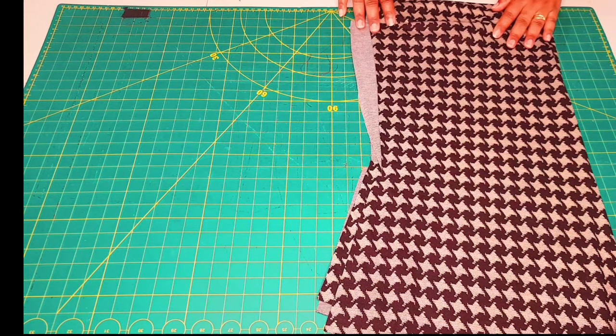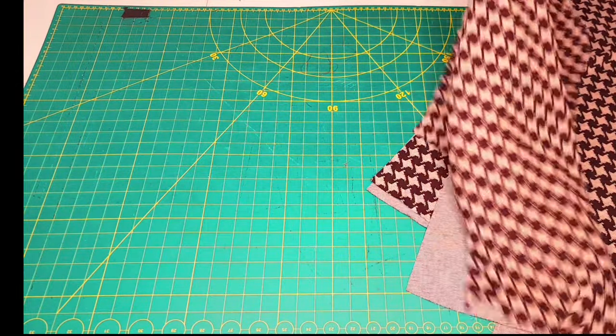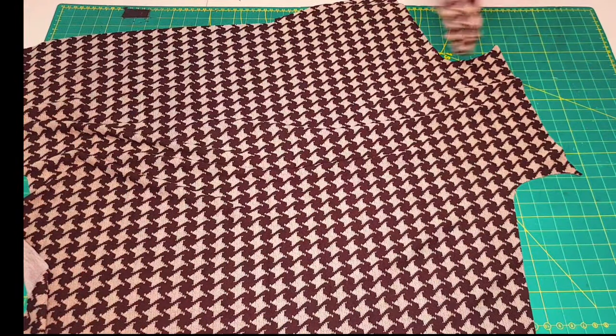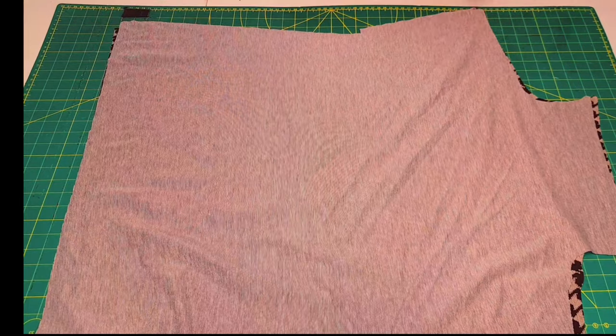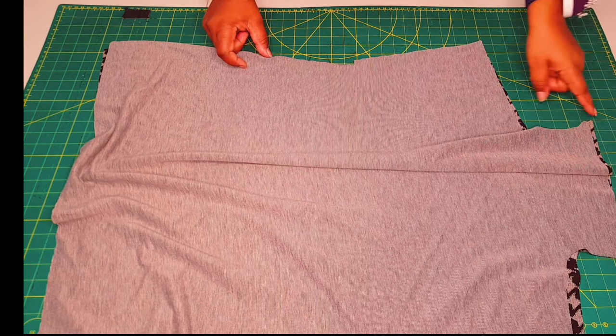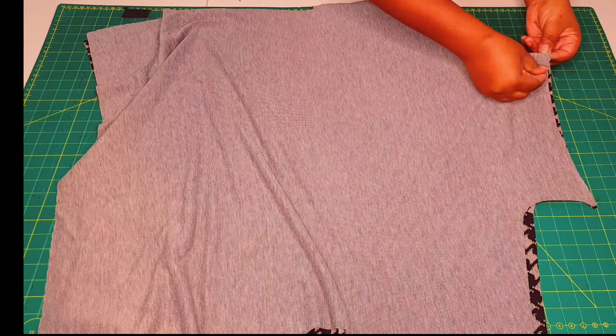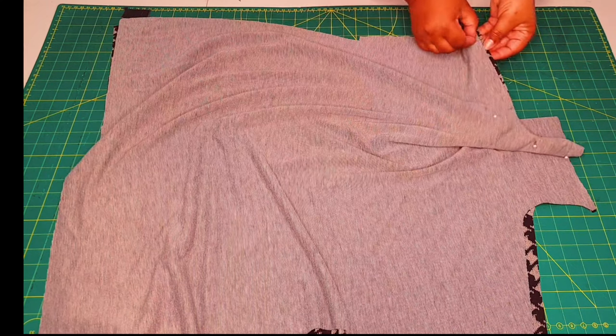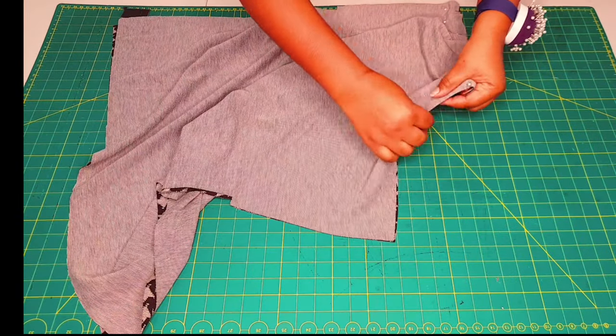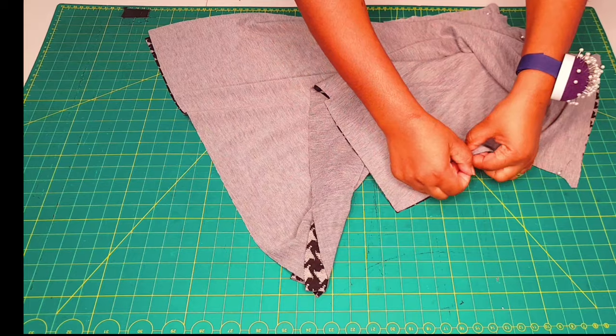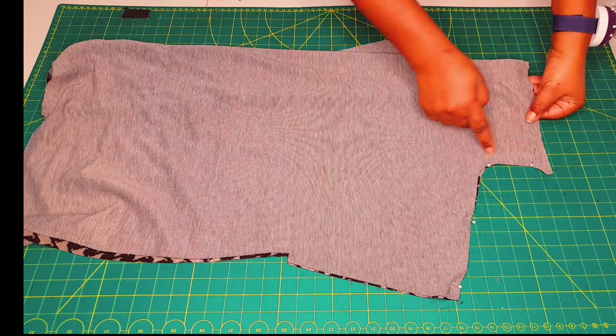We finished cutting our pattern pieces. The first thing we're going to do is lay our patterns right sides facing. Go ahead and pin along the neckline all the way to the shoulder seam for both sides. Now we're gonna take this to the serger and sew from the neckline all the way to the end of the shoulder seam for both sides.